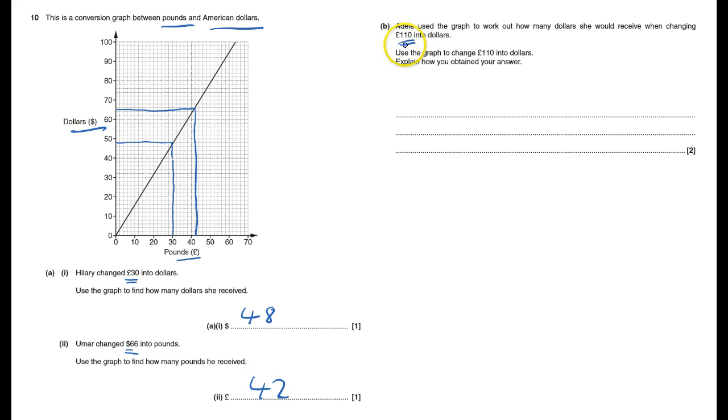Adele used the graph to work out when changing 110 dollars. So we need 110 pounds into dollars. I can't go 110 because it only goes up to 70. You could do a 50 and a 60, I'm gonna do a 55. I'm gonna change 55 pounds so that'll be straight up through here, just keep that going, moved off a bit.